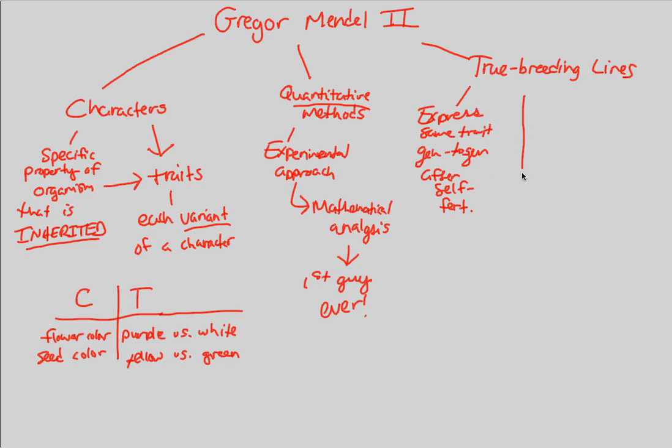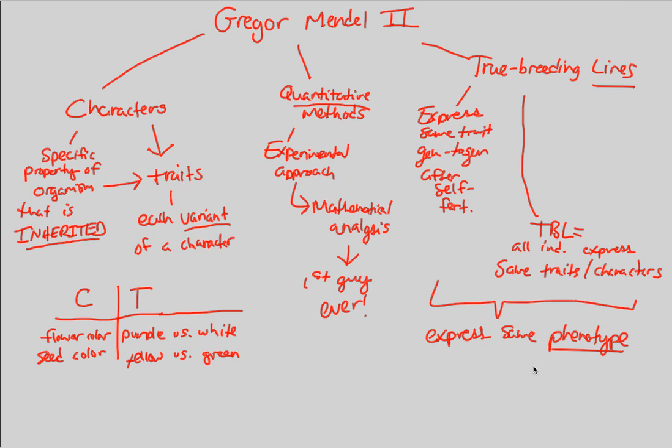Basically, another way to put this and another way to define all of this is to say that TBL, what do you think that stands for? True breeding lines is equal to all individuals, and when we say individuals, we're obviously referring to the pea plants, express same traits and characters. So what do I mean by this? What are true breeding lines from more of an example standpoint? What we can say about this idea of true breeding lines is that everybody within this line, within this generation to generation of self-fertilization, is going to express same, and this is a new word, hopefully you've seen it before in your high school classes, phenotype. They're going to express the same phenotype over and over and over and over again, after self-fertilization.